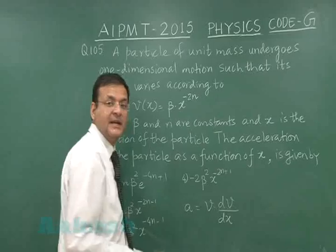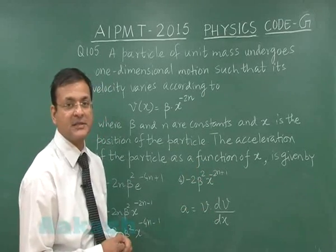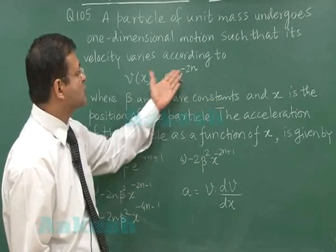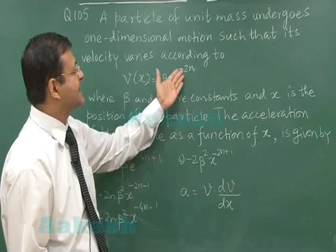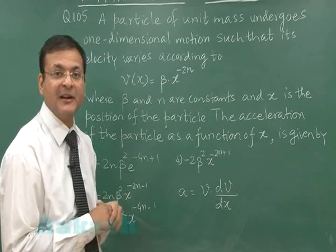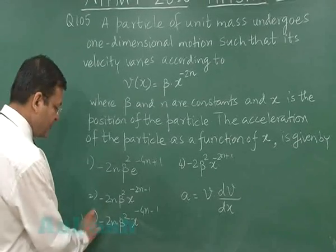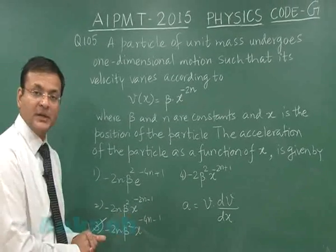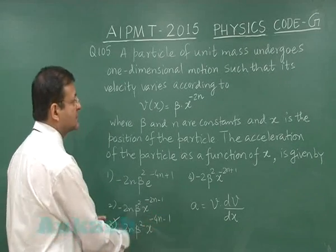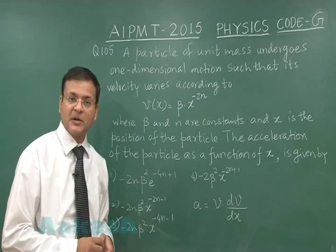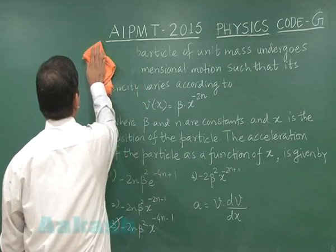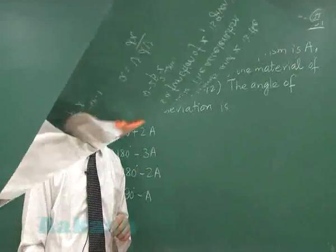We differentiate v with respect to x: dv/dx = β(−n)x^(−n−1). Multiplying by v = βx⁻ⁿ gives acceleration = −nβ²x^(−2n−1). The most appropriate option is option 3: −2nβ²x^(−4n−1). This is the answer to question 105. Moving to question 106.